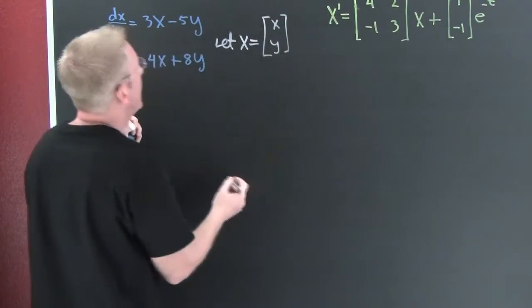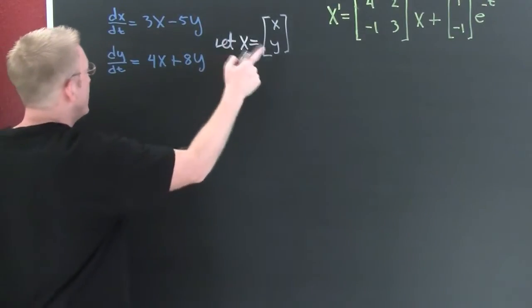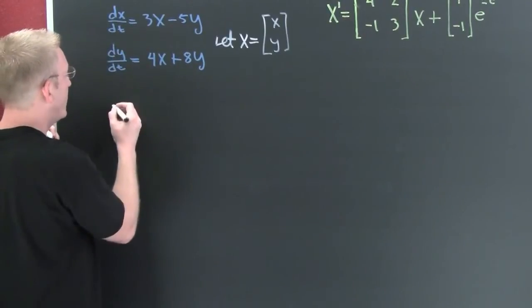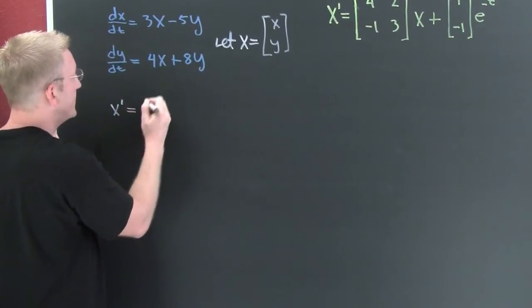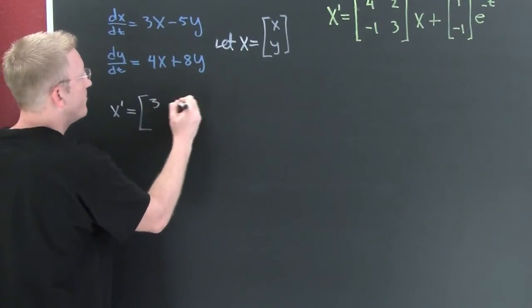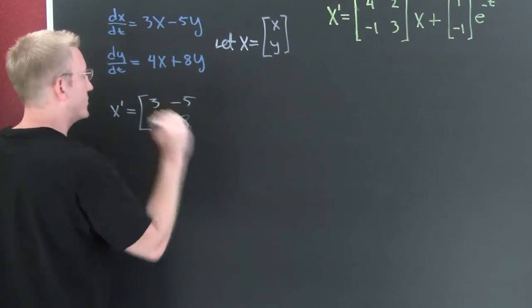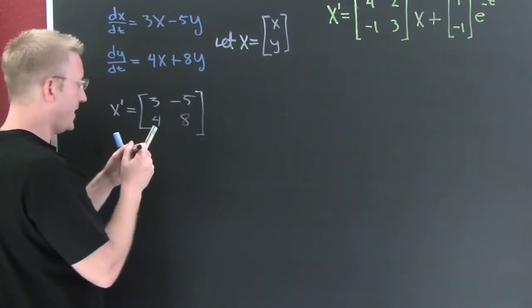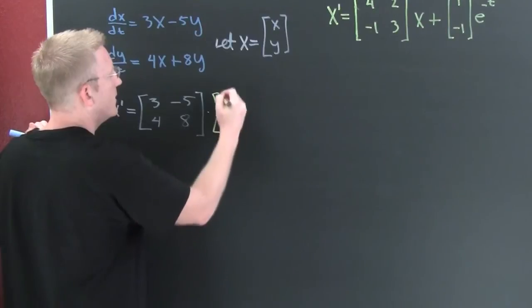x, y. So then I want to rewrite this guy in terms of that. Here, this is going to be the derivative of x. x prime, that's going to be this coefficient matrix, 3 minus 5 and 4, 8, times my x, y.